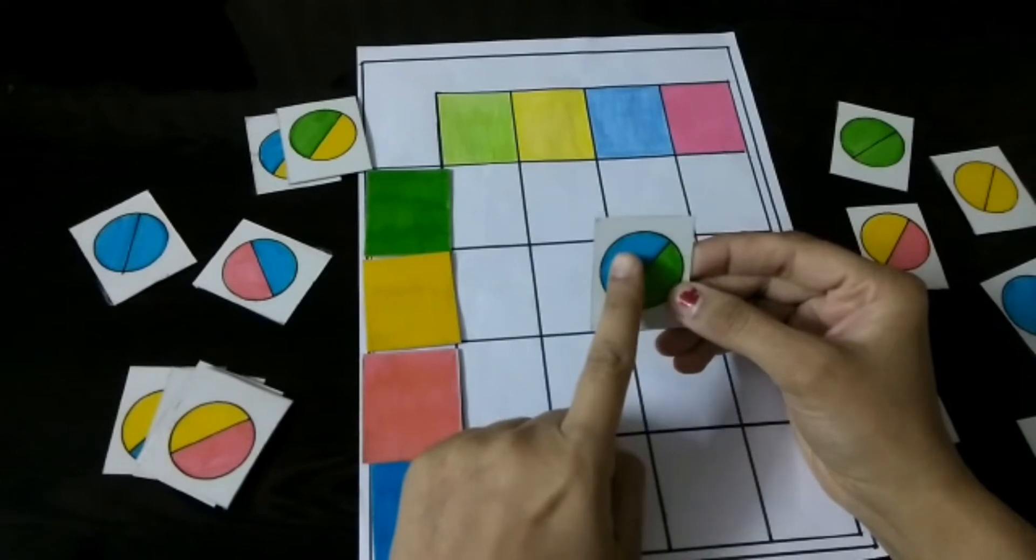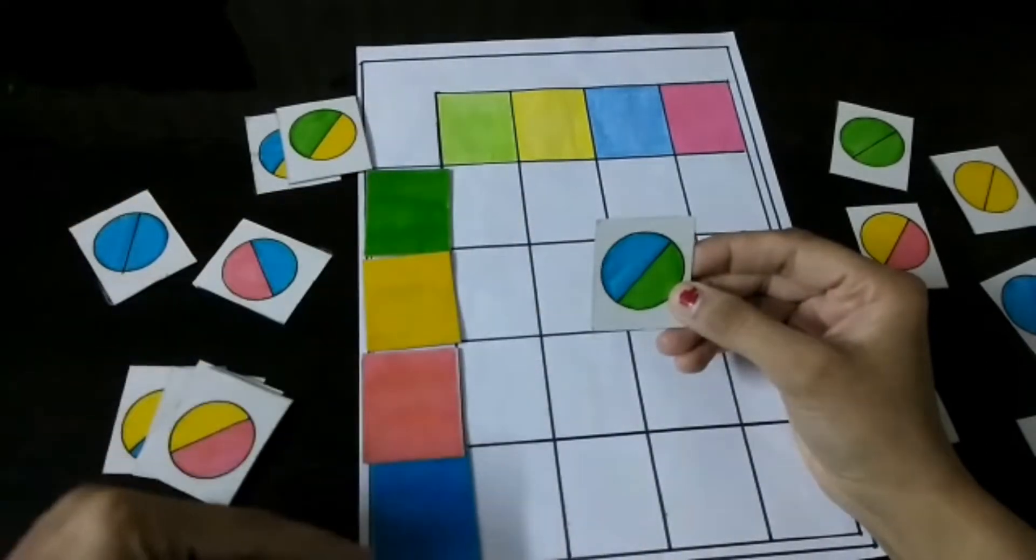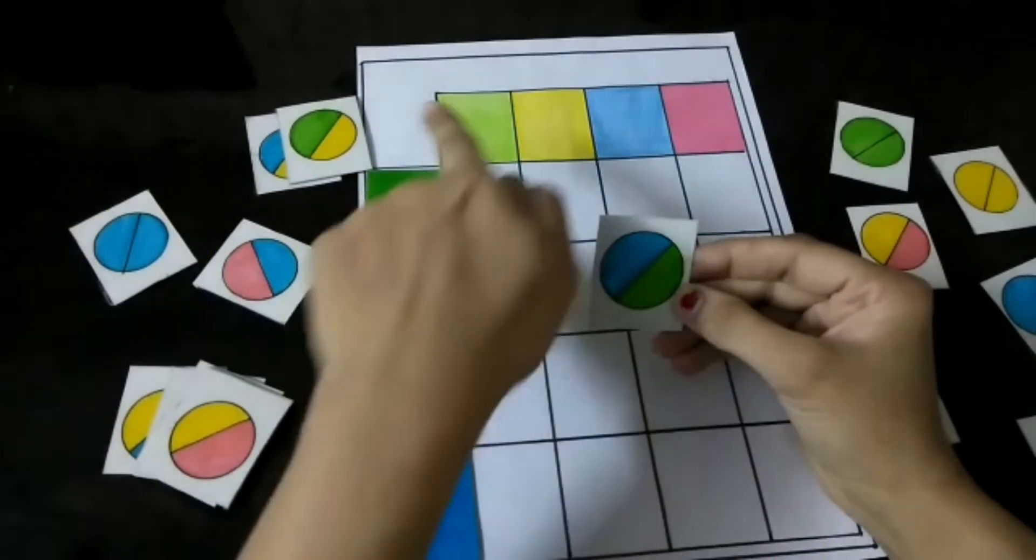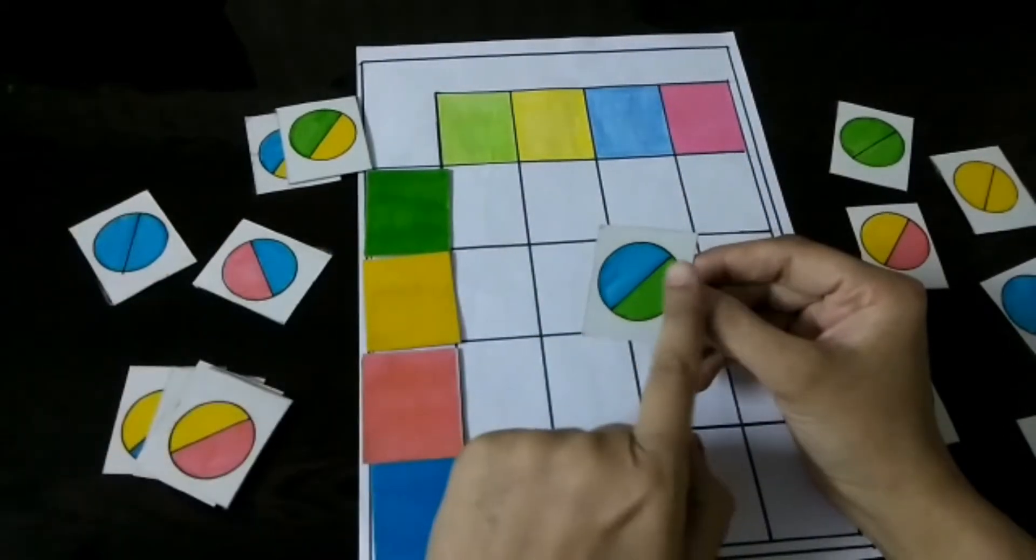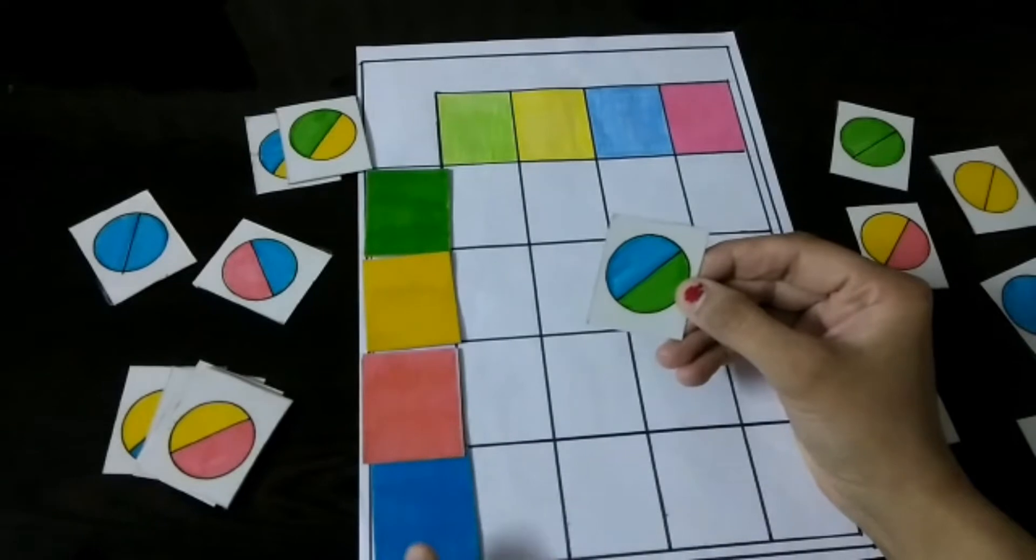So the first color we see in the column, and the second color we will see in the row. So what the child has to do in this: if it's a blue color, then the child has to see where is the blue color in this column.